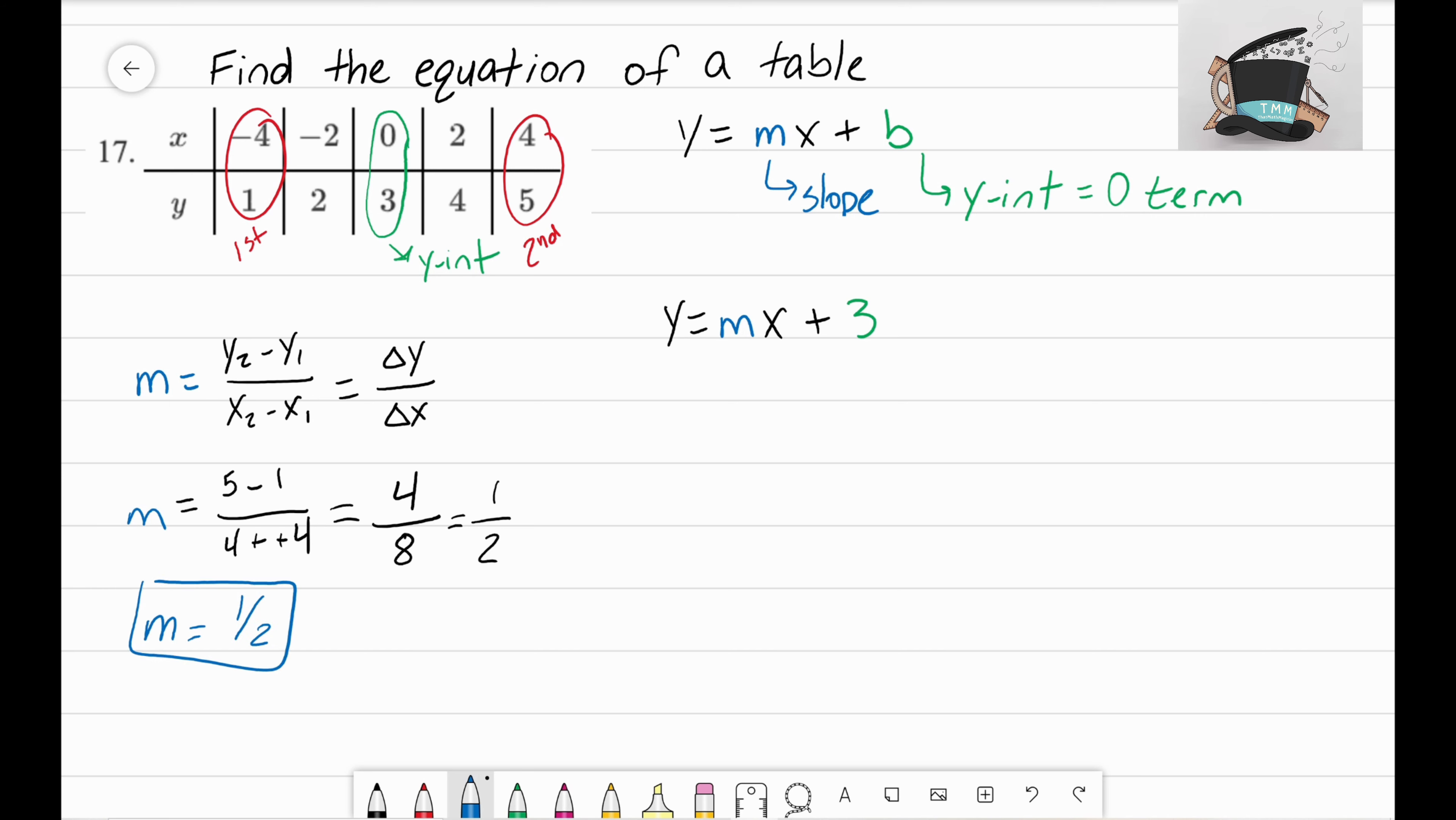You could have picked any two different points and you should still end up with m equals one half. Now we're done with our equation. We have y equals—we now know that our m is one half—x plus three.